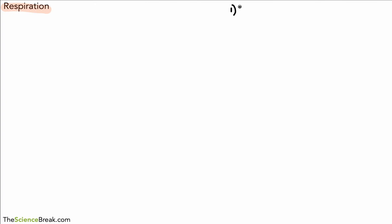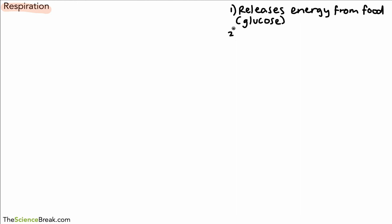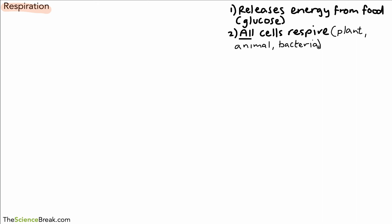So we're looking at respiration. There are two key and important things we should remember about respiration. The first one is that respiration releases energy from food — in particular, the glucose found in food. The second thing that's really important to remember is that all living cells respire, or carry out respiration. By all living cells, we mean those cells from plants, living cells in animals, and bacteria as well. So all cells will respire to stay alive.